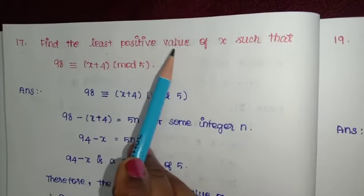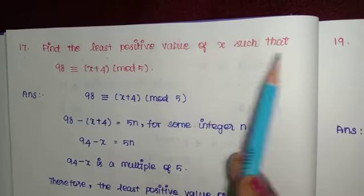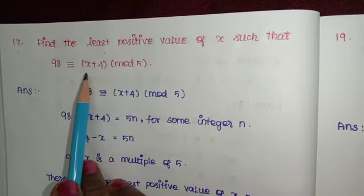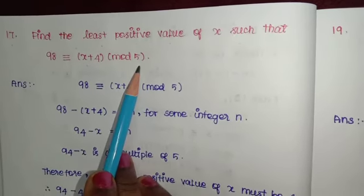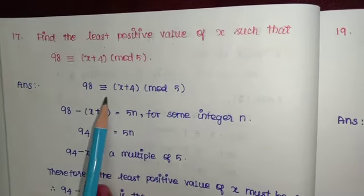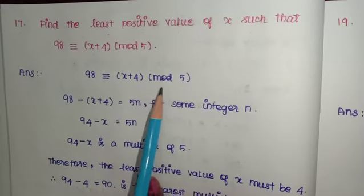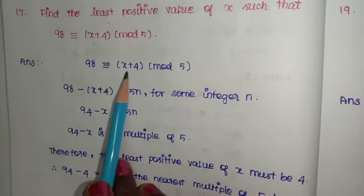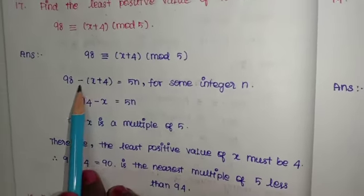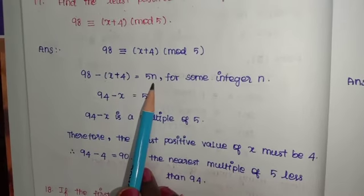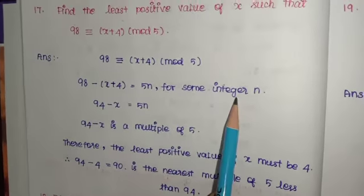Find the least positive value of x such that 98 ≡ (x+4) (mod 5). This means 98 - (x+4) = 5n for some integer n.